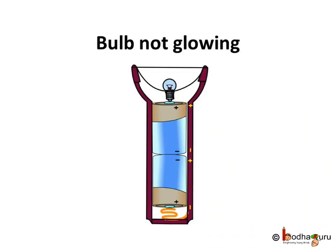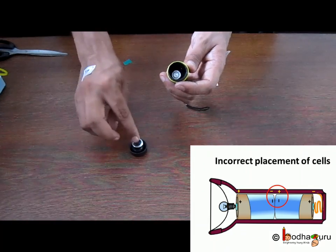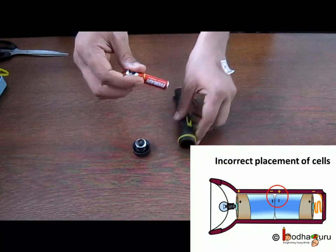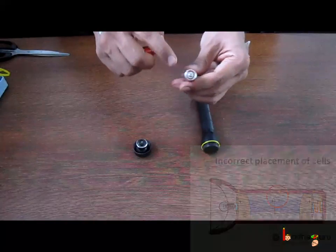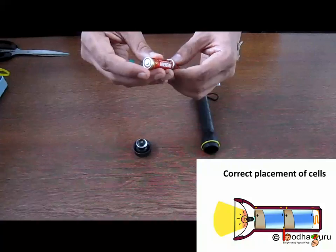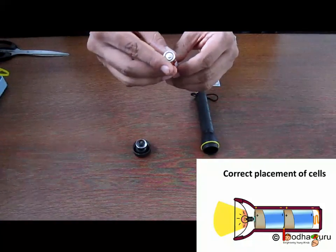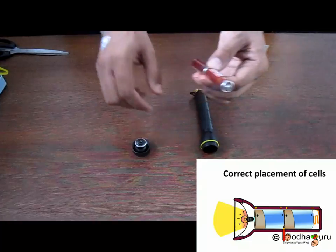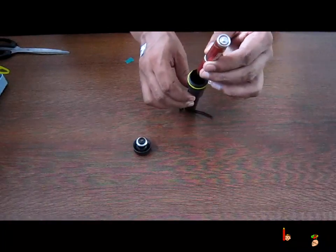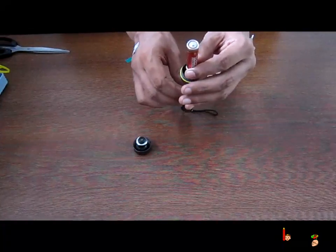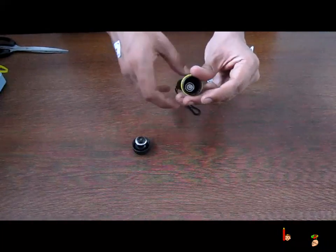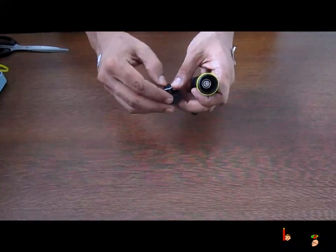Let's open the torch again to see if we have not connected the cells in a proper way. Yeah, that is the reason. We need to join the cells in a correct sequence. That is, the negative end of one cell goes at the bottom, then its positive end, then connected to the negative end of another cell, then its positive end, and then connected to the bulb. So let's insert the cells in this way.